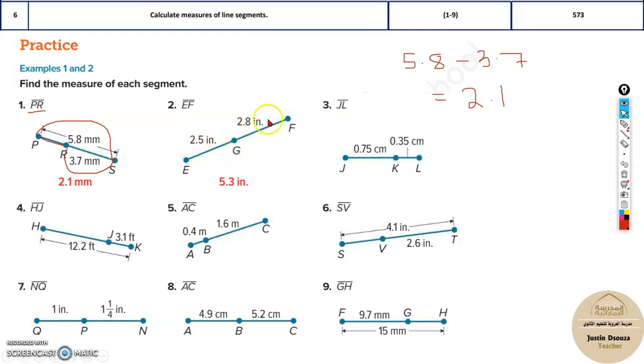Now over here you can see the two segments are given and the whole length is asked. See, EG is given as 2.5, 2.8 is GF, and the whole segment is unknown. Simply add these two segments, you will get the answer, that is 5.3.